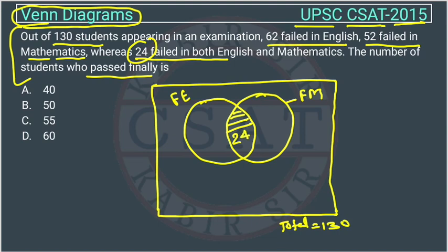The number of student failed in English is given 62 and this is given 52. If this total circle represents 62 out of this, 24 are here. The remaining is 62 minus 24, this will be 38. Similarly, the total circle is representing 52. 24 is this, so the remaining is 28.